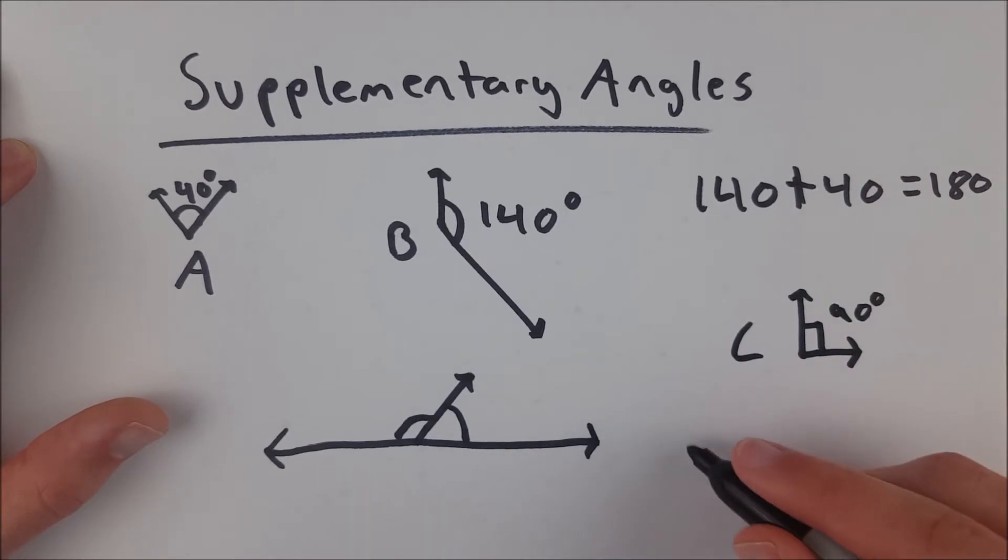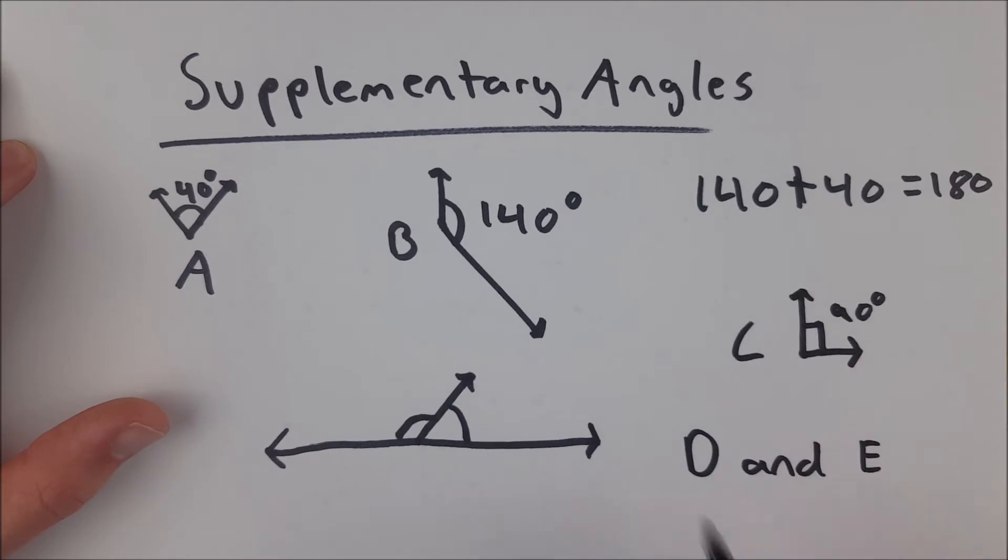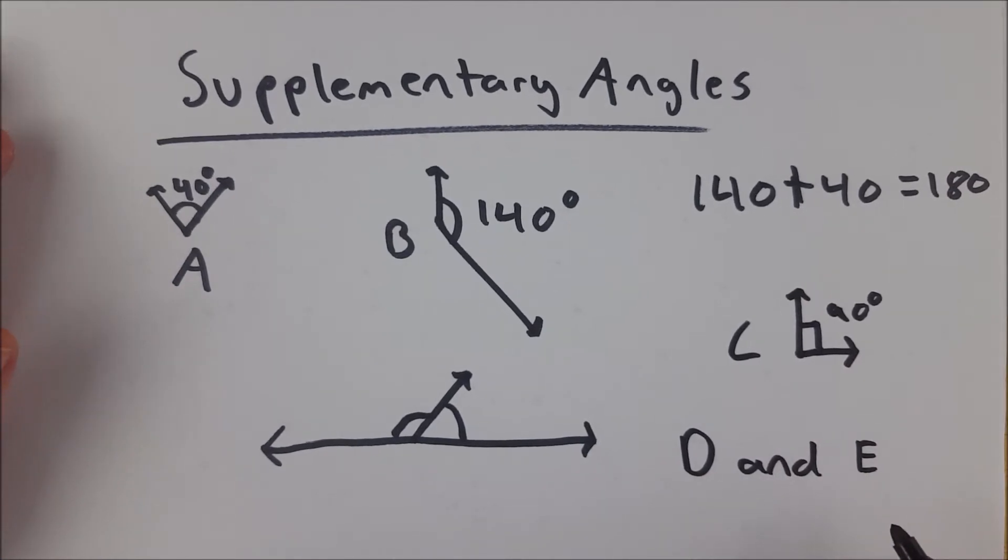and we know that angles D and E are both supplementary to C, then they must be congruent to each other. And in this case, they must both be 90 degrees.